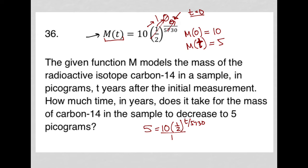I can then divide both sides by 10. And that would lead me to having one half, because five over 10 is one half. One half equals one half to the t over 5730.